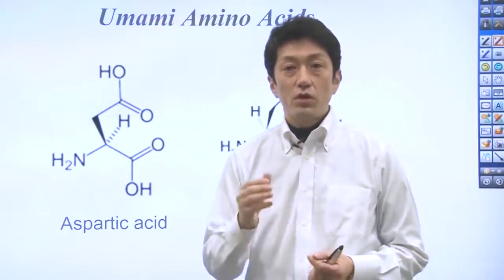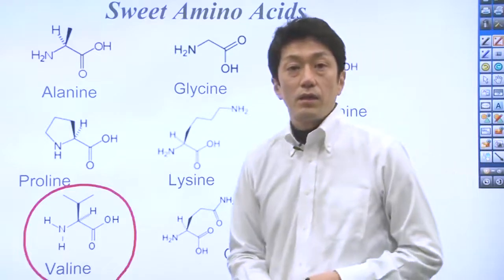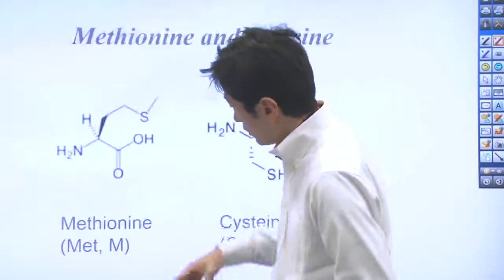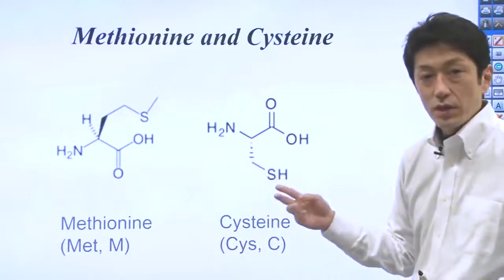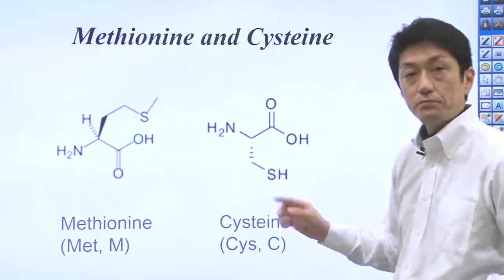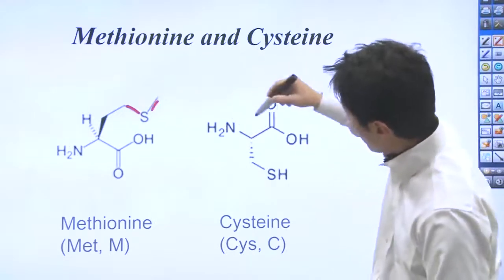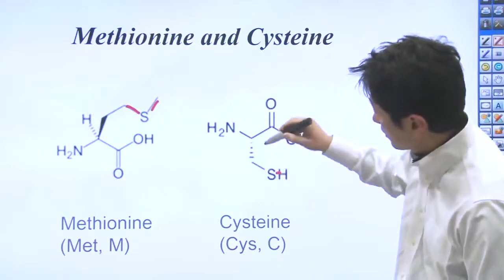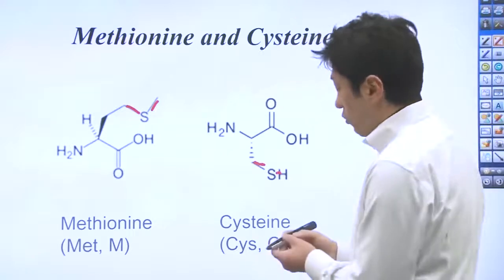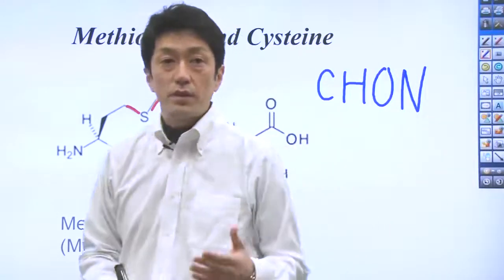All amino acids use only four atoms — CHON — as I mentioned earlier, except cysteine and methionine. Only these two amino acids use sulfur atoms, represented by S. The sulfur atoms behave just like oxygen atoms, having two bonds. But most amino acids use only CHON to build their chemical structures.